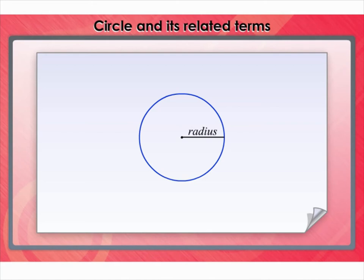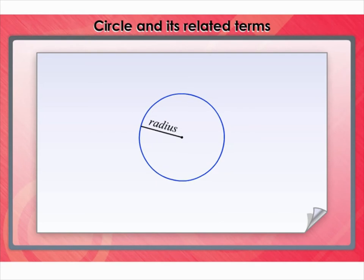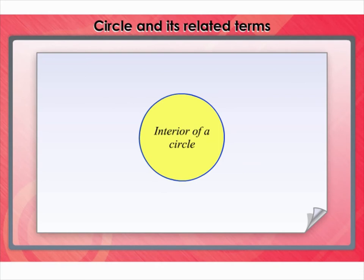Radius is used in two senses — in the sense of a line segment, and also in the sense of its length. A circle on the plane divides into three parts: the exterior of a circle, the circle itself, and the interior of the circle. The circle and the interior together comprise the circular region occupied by the circle.